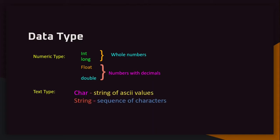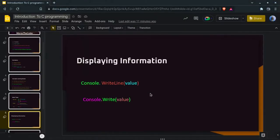We have the text type, which has two types: char and string. Char is a string of ASCII values — there's an ASCII table you can search; we'll discuss it in future tutorials when we compare alphabets. String is just a sequence of characters. Lastly, we have boolean, which has either the value true or false.